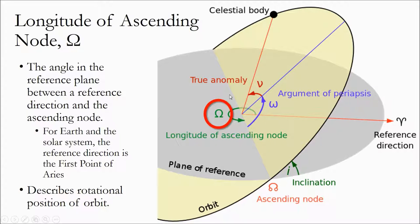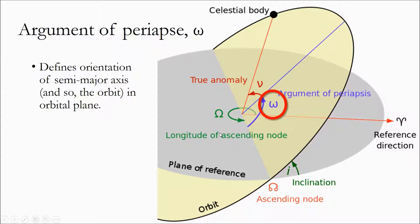You can imagine what would happen if we changed the longitude of the ascending node — it's like grabbing the plane of reference and rotating it. If this is your periaps down here and apoaps up here, moving the plane 180 degrees would flip them. Moving on to the argument of periaps: it's a similar rotational parameter, but instead of grabbing the reference plane you're grabbing the orbit itself. Small omega is the angle from the ascending node to the periaps in the plane of the orbit, basically defining the orientation of the semi-major axis in the orbital plane.